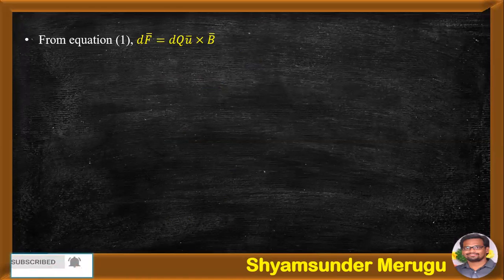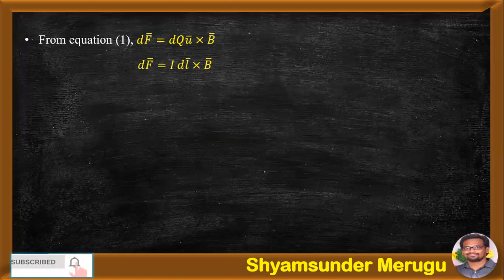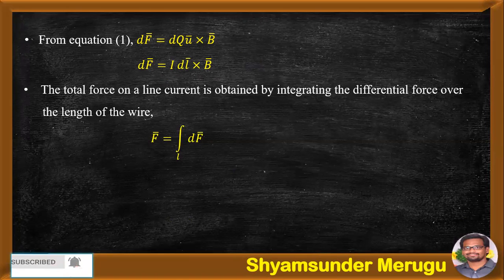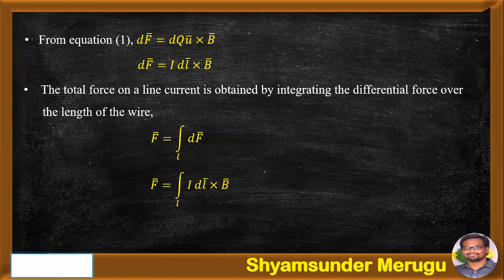From equation 1, dF bar equals dQ U bar cross B bar. Now we can write dF bar equals IdL bar cross B bar. The total force on a line current is obtained by integrating the differential force over the length of the wire. So the length of the wire is L, and integrating we get F bar equals integral over L of dF bar. Substituting the expression for dF bar, we get F bar equals the line integral of IdL bar cross B bar.